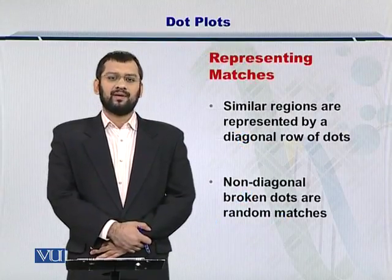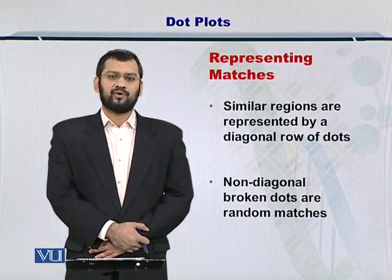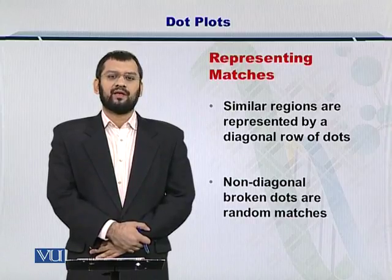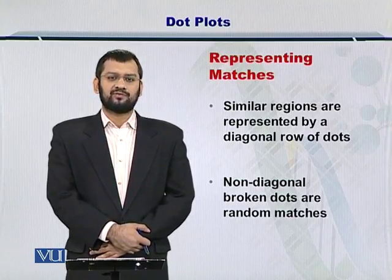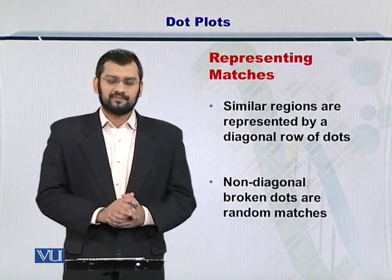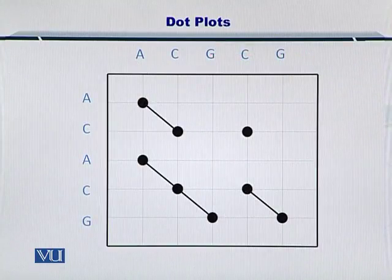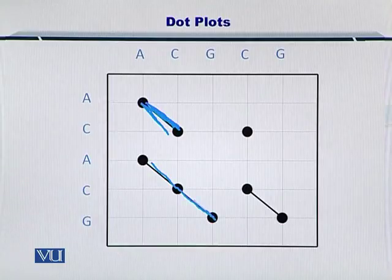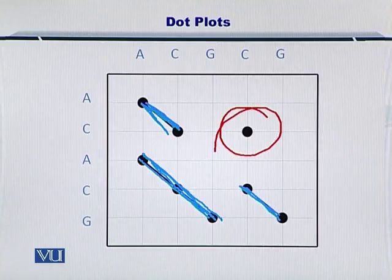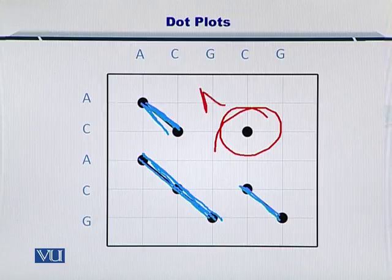As the next step, we will be connecting these dots on the matrix in such a way that adjacent nucleotides will be connected to each other. There may be a situation where some dots will not get connected to any other dot — in that case, they are simply noise or random matches. As you can see, these two dots could be connected as they are adjacent. These three dots could be connected diagonally, and these two dots are also connected diagonally. However, there is one dot that could not be connected, and therefore it is just random noise.